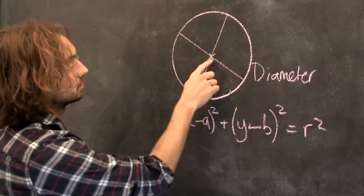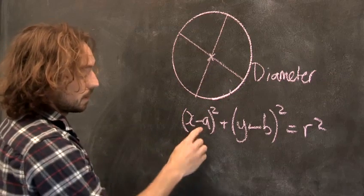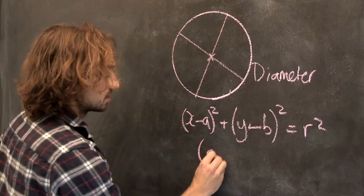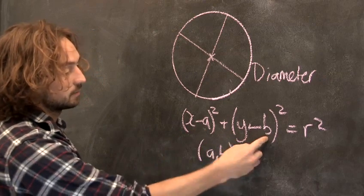R represents the radius of the circle, which is from here to the edge. It's from the centre to the edge. And the centre of the circle here is just simply the point A, B written in coordinates. So at this point A, B.